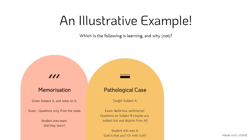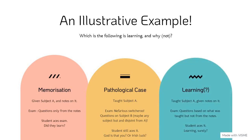Then we have that second pathological case in which the student was taught subject A, but in the exam the student is given any other subject B, which is disjoint from A, and they still managed to ace it. And then we have the more conventional kind of learning done in classrooms, in which a student is given subject A with notes, and the exam consists of questions pertaining to the same domain but not the exact same questions as those in the notes. If a student aces it, we say they have learned something and are adept in that subject.